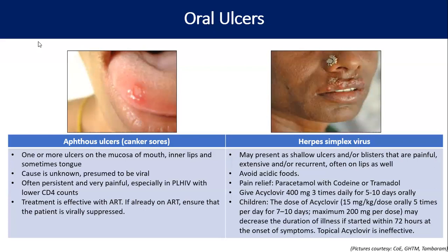Another possible ulcer is the syphilitic ulcer, which looks like a chancre but is almost always painless. We can confirm it by doing a VDRL test where the titer will be very high. If found to be syphilitic, we should treat with penicillin 2.4 million units intramuscularly once a week for three weeks.